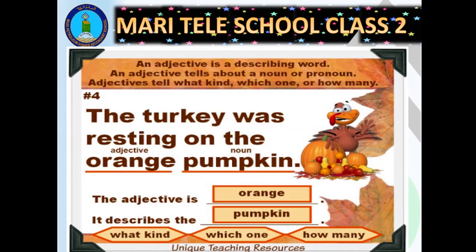Now let's go for the examples. The turkey was resting on the orange pumpkin. In this picture, you can see there is a bird — and where is it resting? On the orange pumpkin. Now you must be thinking: orange is a color. Yes, colors are also adjectives! It is describing the noun 'pumpkin.' What is the color of the pumpkin? It's not red, it's not green — it's orange. So 'pumpkin' is a noun, and 'orange' is the adjective describing it.